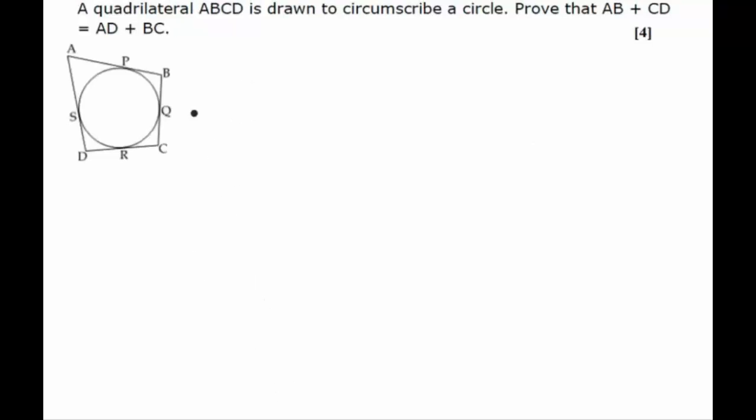So first of all, we draw the quadrilateral ABCD which is circumscribing a circle. So we say that let ABCD be the quadrilateral circumscribing a circle.